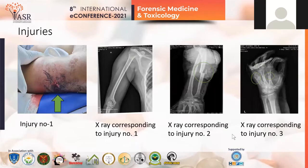Let's discuss the injuries one by one. Injury number one: there was a laceration surrounded by a reddish abrasion of size 1×1 cm, muscle deep, and the abrasion over an area of 8×5 cm, present over the back of the lower one-third of the right arm. The age of the injury was fresh as blood was oozing from the wound, and the weapon used was blunt. The corresponding X-ray showed no fracture line, so injury number one was simple in nature.